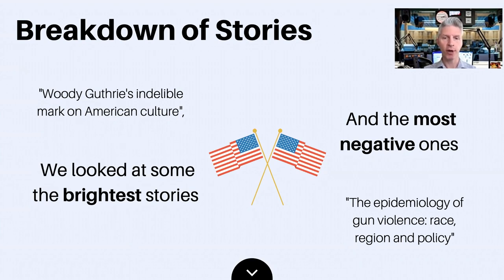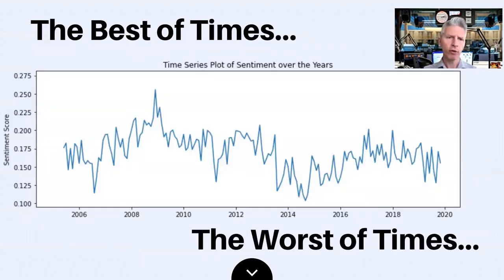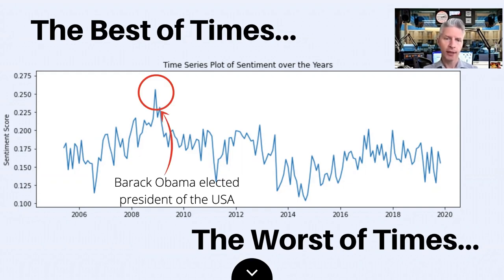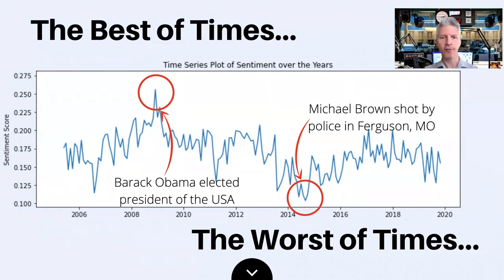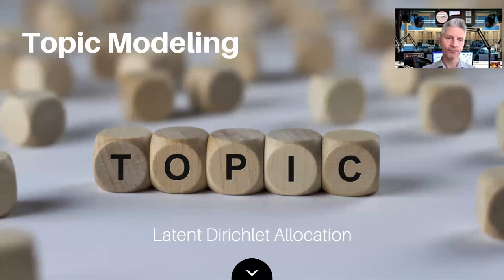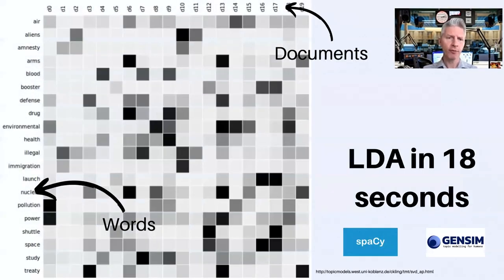We had a look at some of the stories with a maximum sentiment rating, such as Woody Guthrie's indelible mark on American culture, and the minimum, the epidemiology of gun violence, race, region, and policy. There were many, many more stories with the max rating and only a handful with a minimum. We created a graph of overall sentiment over time, and it made us wonder what was going on during the quote-unquote best of times and during the worst of times. During ups and downs, sentiment carries a weight in radio broadcasts that may influence listeners, and NPR is effective at remaining neutral at almost all times. As we analyzed our data set, we thought it would be interesting to see if there were different topics being discussed by different hosts or at different times or after certain events. This method, the method applied was latent Dirichlet allocation, or LDA, which we modeled using Gensim and Spacey.